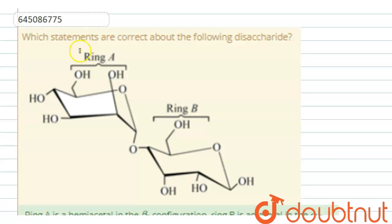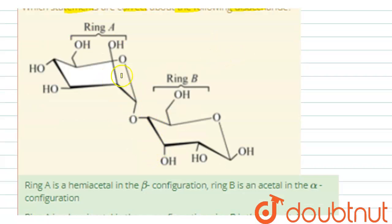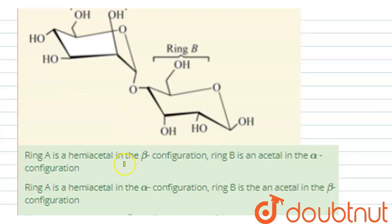Dear friends, the question is: which statements are correct about the following disaccharide? Here there is a disaccharide — two monosaccharide units are joined, therefore it is a disaccharide. Now, about this disaccharide, which statements are correct?